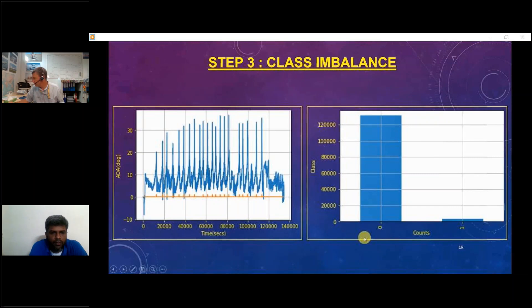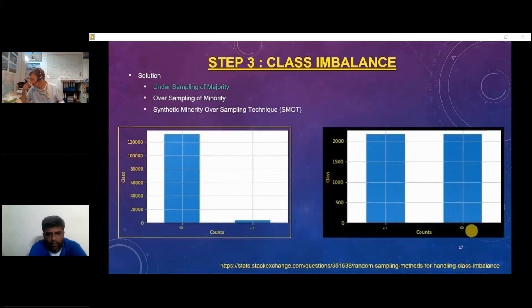But this leads to another problem called class imbalance. You see that the non-stall test points are close to 120,000 rows whereas the stall test points are less than 5,000. This is a typical class imbalance issue which we need to address. There are different methods of addressing this class imbalance like you can under-sample the majority or over-sample the minority. There's synthetic minority oversampling technique. Here I just did the under-sampling of majority. You can see the class imbalance, the zeros and ones, the non-stall and the stall conditions has been equalized.